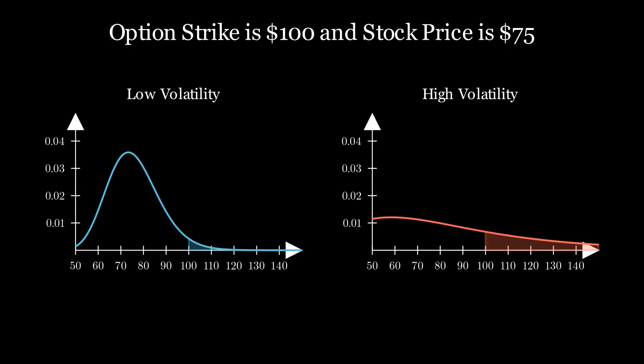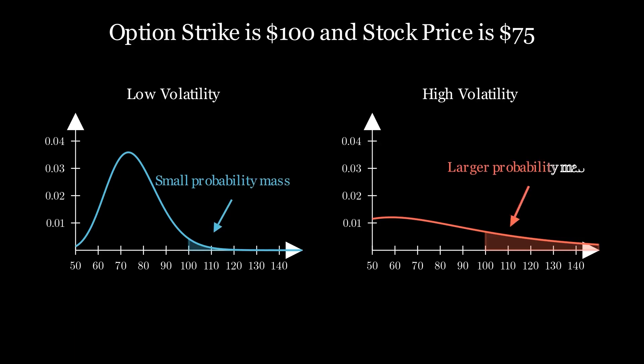One key assumption in the Black-Scholes model is that volatility stays constant throughout the option's life. That's not realistic, of course, but it makes the math simpler while still giving us a very useful framework.